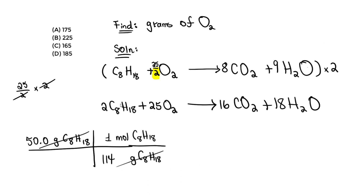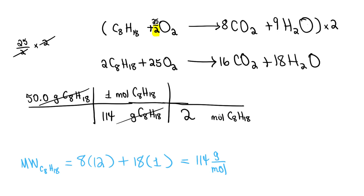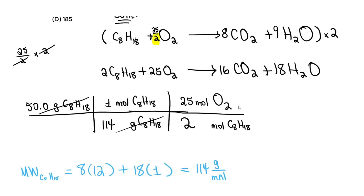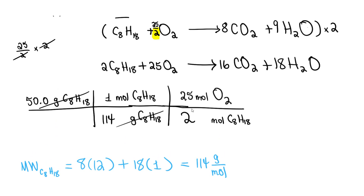Now that we have moles of octane, we use the balanced chemical equation to apply the mole-to-mole ratio. We know for every 2 moles of C8H18 we need 25 moles of O2. So we place moles of C8H18 in the denominator and 25 moles of O2 in the numerator. The moles of octane cancel, and we're left with moles of oxygen — because that's what we want to find.